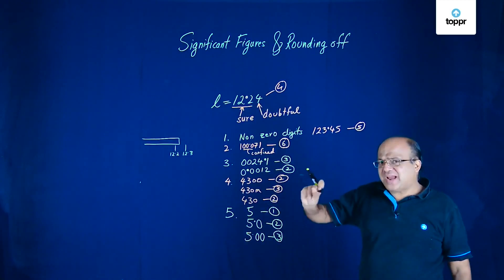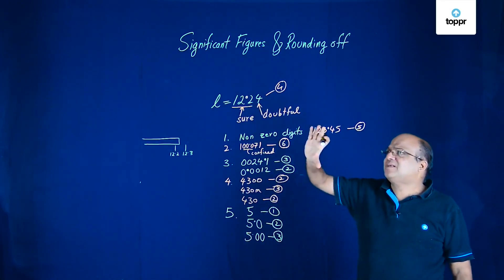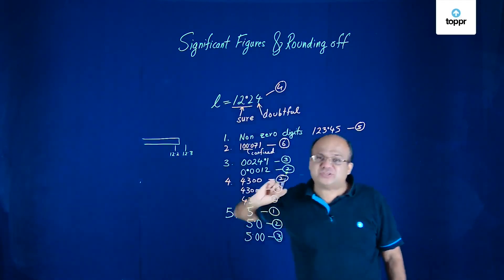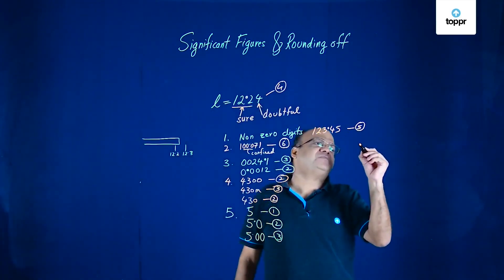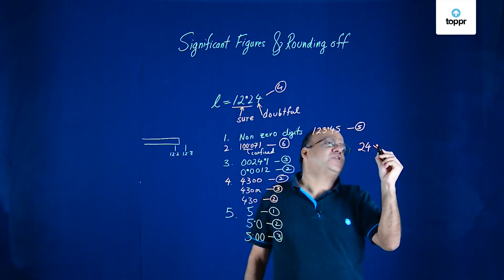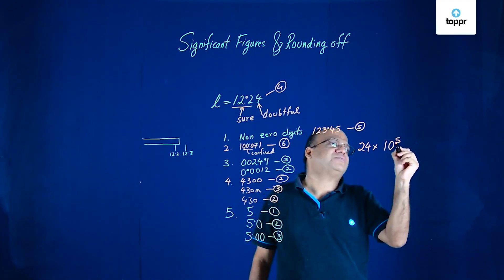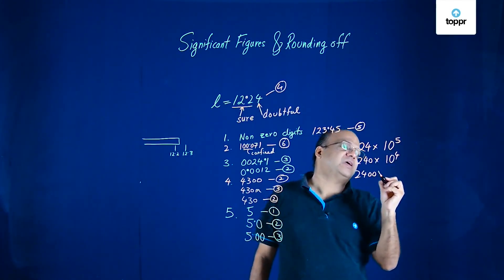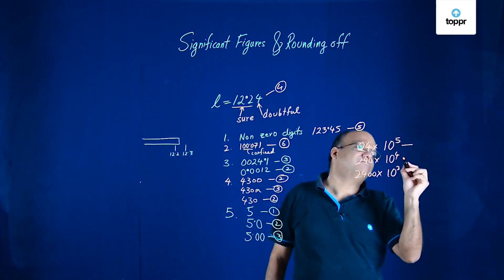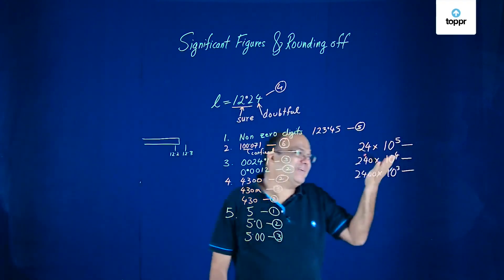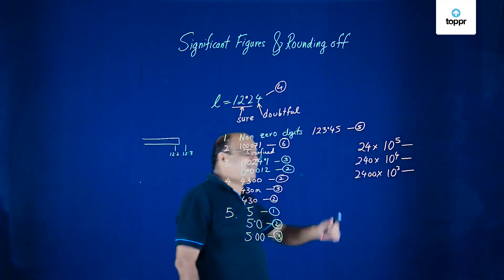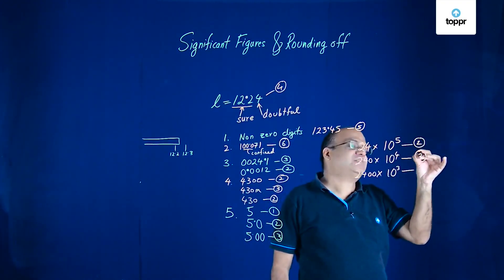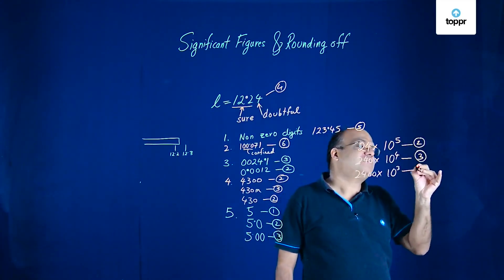For scientific notation there is a different rule. What is the difference between 24 × 10⁵, 240 × 10⁴, and 2400 × 10³? You may say all are the same numerically — but 24 × 10⁵ has two significant digits, 240 × 10⁴ has three significant digits, and 2400 × 10³ has four significant digits. So significant digits tell us the accuracy of the measurement.